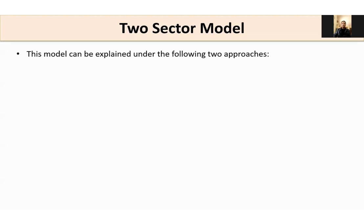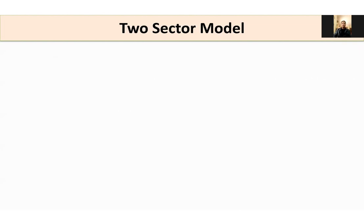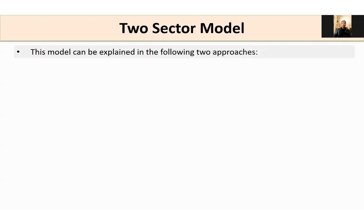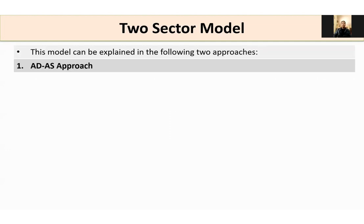These are the assumptions of the two-sector model. Now, this model can be explained under two approaches: the aggregate demand and aggregate supply approach, and the saving-investment approach. We are going to discuss the model under both of these approaches.